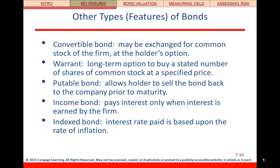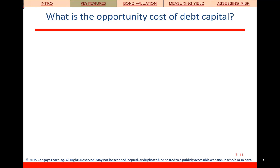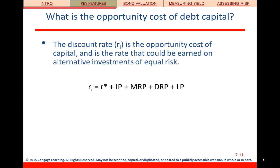Lastly, an index bond has an interest rate based on the rate of inflation — the exception to the rule that coupon rates don't change. Tying these bond discussions to our interest rate discussions from the previous chapter: the discount rate is the opportunity cost of capital — the rate that could be earned on alternative investments of equal risk. We're taking that nominal interest rate formula from Chapter 6 and calling it the discount rate, or opportunity cost of debt capital.